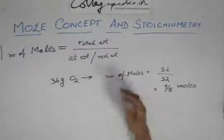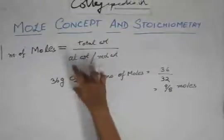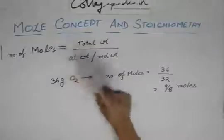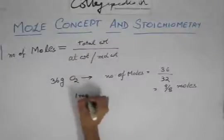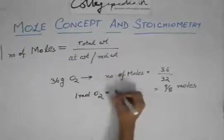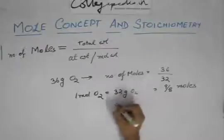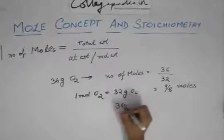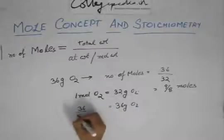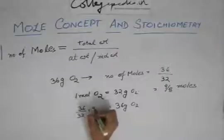It's just that you need to know that the oxygen molecule has a molecular weight of 32. So one mole of oxygen equals 32 grams of oxygen. If you want the number of moles of 36 grams of oxygen, you just have to divide it by 32, which is 9 by 8.